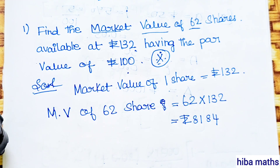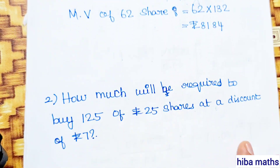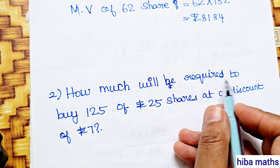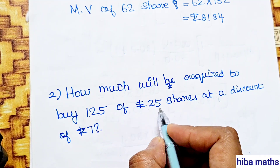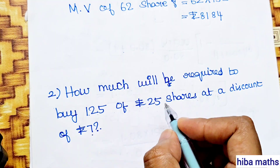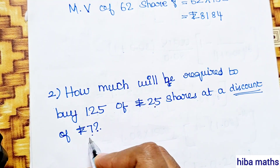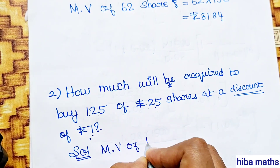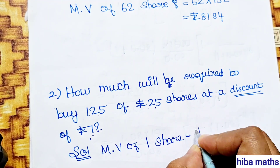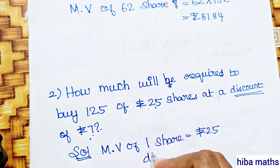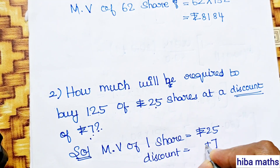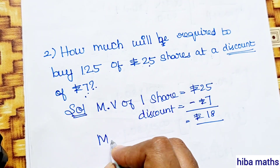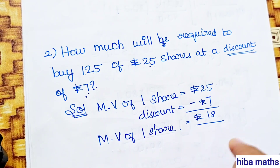Next question: find the market value required to buy 125 shares at a discount of 7%. So, 25 shares with a discount of 7 rupees. One share after discount is found by applying the discount. Market value of 1 share after discount of 7% is calculated.